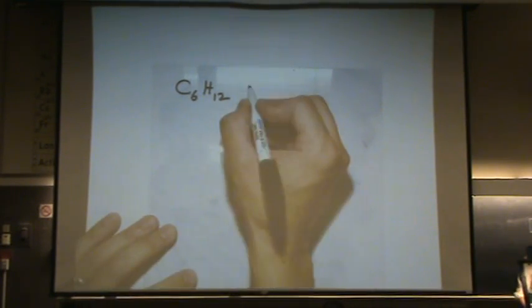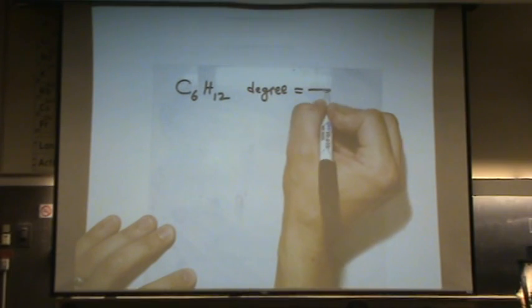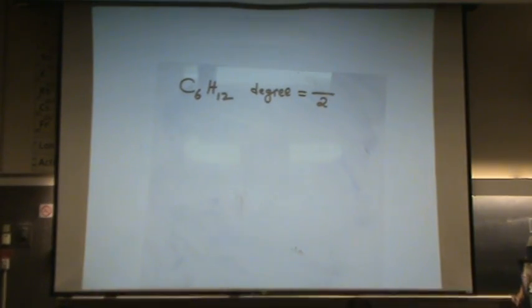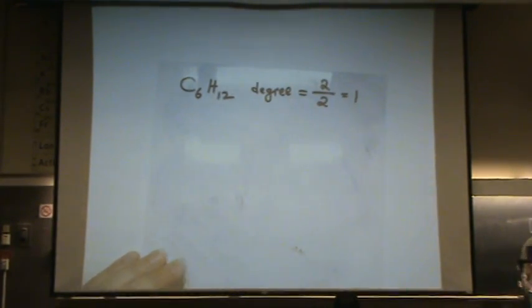So it's helpful to me to first calculate the degree of unsaturation. The degree would be the number of hydrogens missing divided by two. How many hydrogens are missing from a fully saturated molecule? Two. So I have one degree of unsaturation.